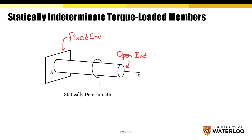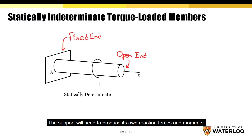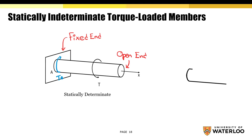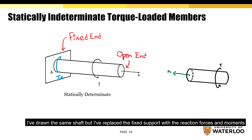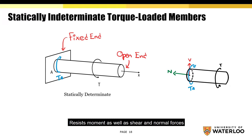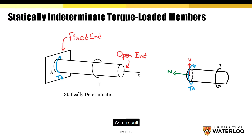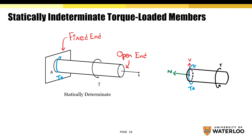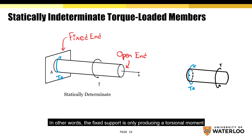For the shaft to be in equilibrium, the support will need to produce its own reaction forces and moments to counteract the applied torque T. We'll call this reaction torque TA. I've drawn the same shaft but replaced the fixed support with the reaction forces and moments. A fixed support normally resists moments as well as shear and normal forces. However, the only applied loading for this particular diagram is the torque, so we're able to disregard the shear and normal forces V and N respectively. Since there is no shear or normal forces for the support to react to, those values equal zero — the fixed support is only producing a torsional moment.